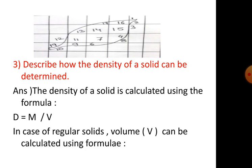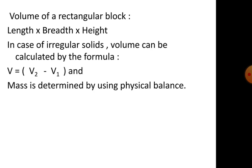Question 3: describe how the density of a solid can be determined. The density of a solid is calculated using the formula D equals M divided by V. In case of regular solids, volume can be calculated using the formula: volume of a rectangular block equals length into breadth into height. In case of irregular solids, volume can be calculated by the formula V equals V2 minus V1. Mass is determined by using a physical balance.